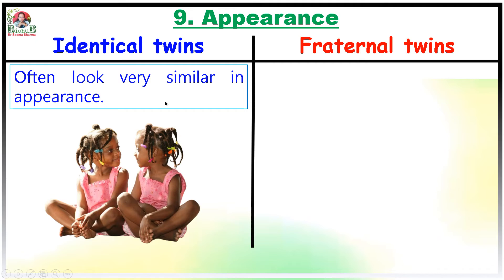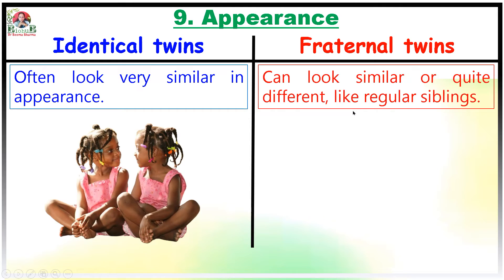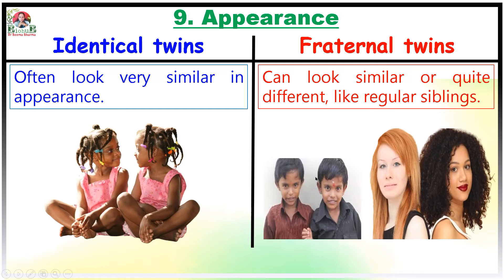The next contrasting feature is appearance. Identical twins often look very similar, just like mirror images of each other, and they even manage to confuse everyone around them. On the other hand, fraternal twins can look similar or quite different, like regular siblings.